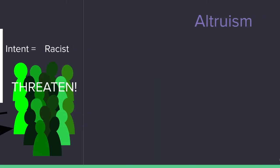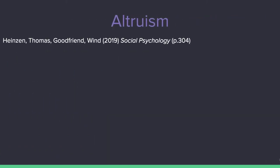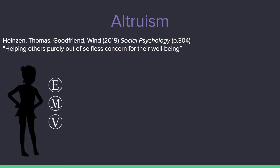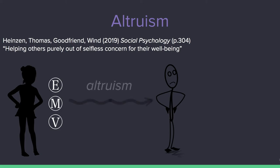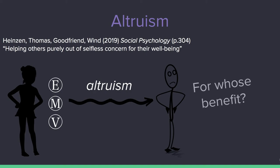So, now we're on to altruism. According to Thomas Heinzen and Wynne Goodfriend's social psychology textbook, altruism is defined as helping others purely out of selfless concern for their well-being. With ethics, morals, and values forming people's beliefs, it can be understood how one can take their ethics, morals, and values and apply it to the way they help others. Acts of altruism are a person's time to reveal what they want others to perceive as their ethics, morals, and values. To be allowed and to allow one to help creates vulnerability, for better or worse.